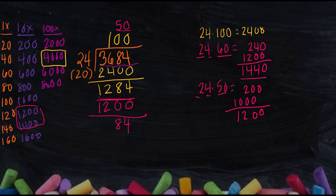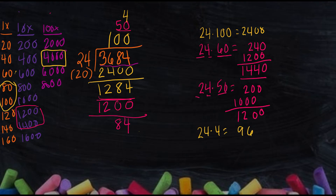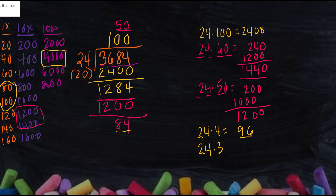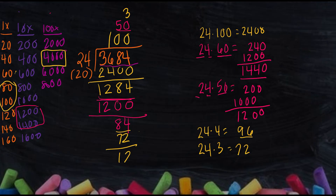I have 84 paper clips remaining. Back to the list — it's between 80 and 100. If I put 4 paper clips in every box and I have 24 boxes, 24 times 4 is 96. But 96 is more than 84, so that estimate is too high. Let's try 24 times 3, which is 72. So I give every box 3 paper clips, sharing 72 altogether, leaving 12 remaining. Twelve paper clips can't share evenly with 24 boxes, so altogether I shared 153 in each box with a remainder of 12.